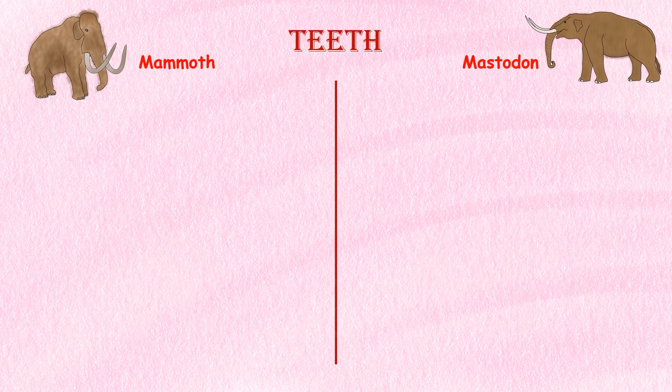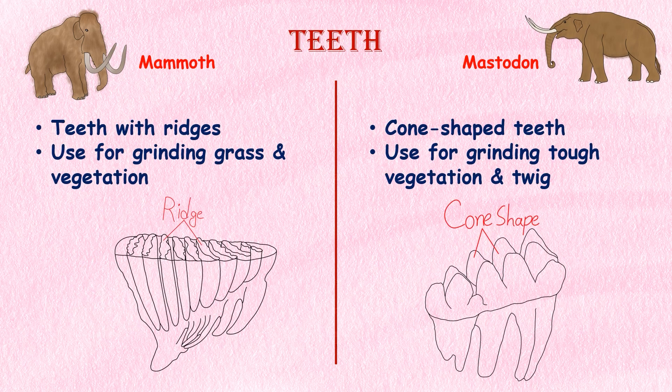Teeth. Mammoths and Mastodons had different types of teeth. Mammoths had teeth with ridges on them that were used for grinding grasses and other vegetation, while Mastodons had teeth with cone-shaped cusps that were used for grinding tougher leaves and twigs. The name Mastodon itself means 'breast tooth.' Mammologists studying Mastodon molars believe the ancient beasts ate a lot of wood, as the cone-shaped design could efficiently crush twigs and hard bits of vegetation.